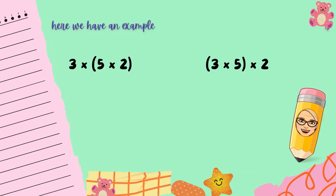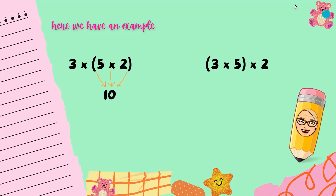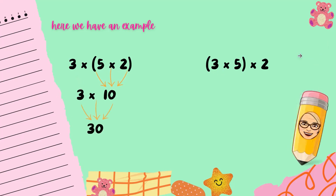Here we have an example. We can multiply 5 times 2, or we can multiply 3 times 5. Let's see: 5 times 2 equals 10, then we multiply 10 times 3, and that is 30.